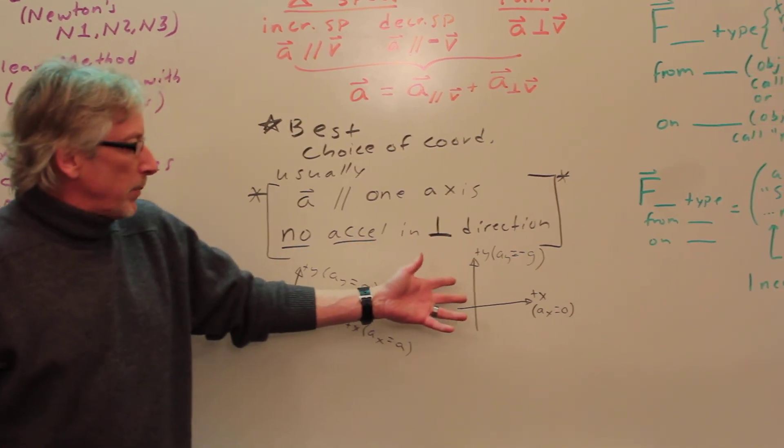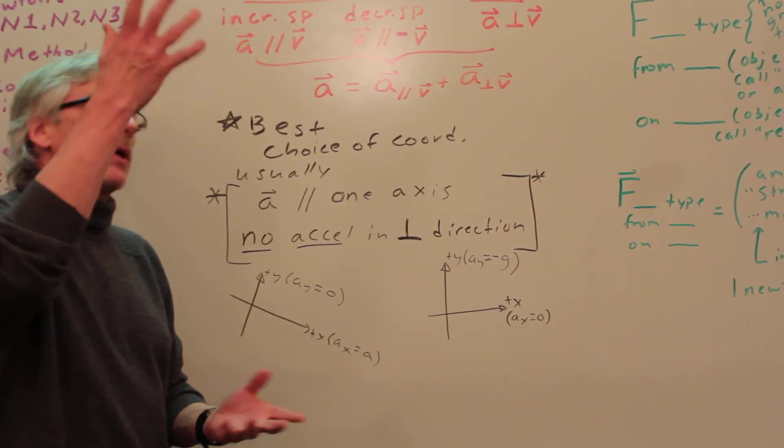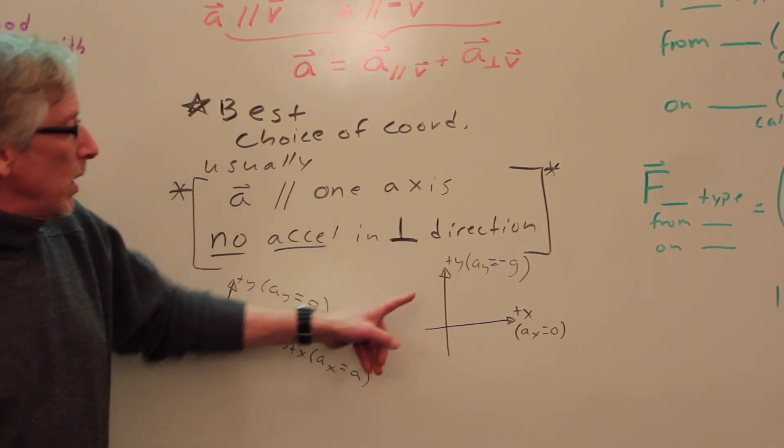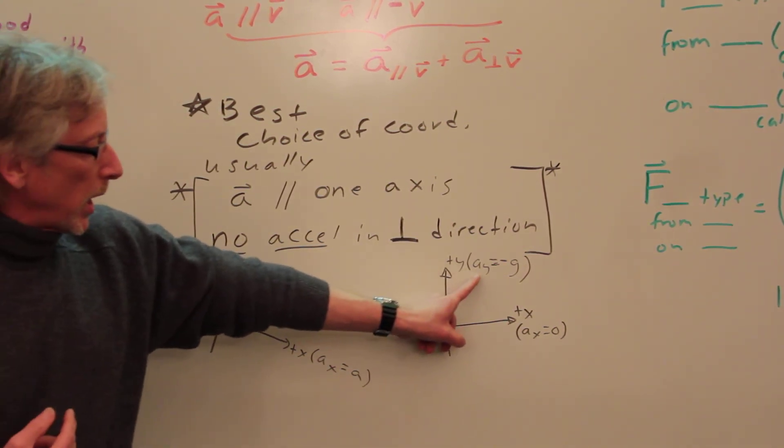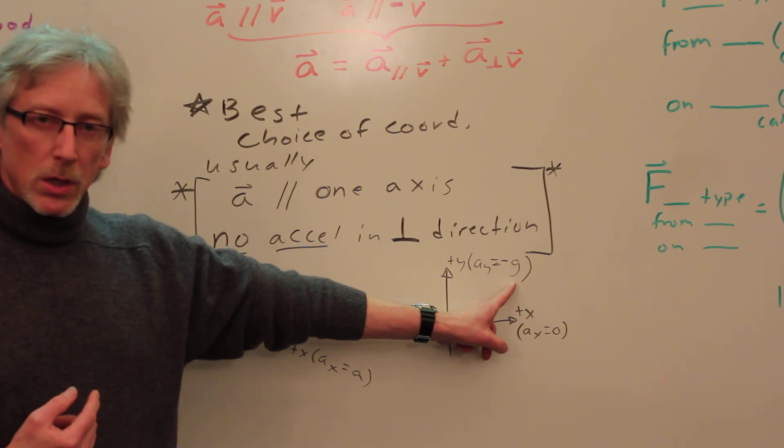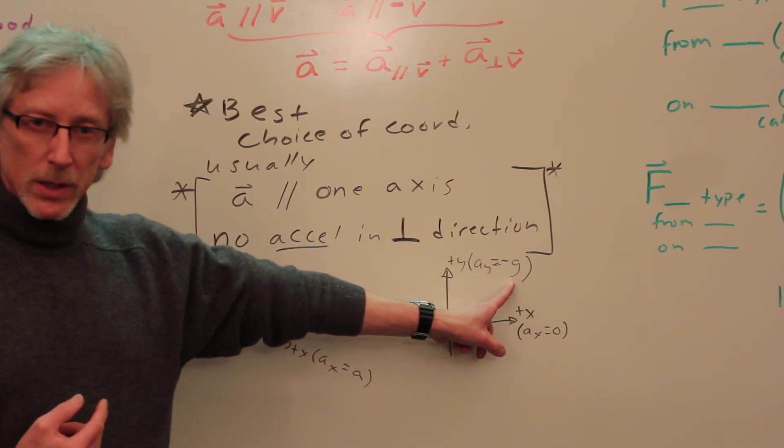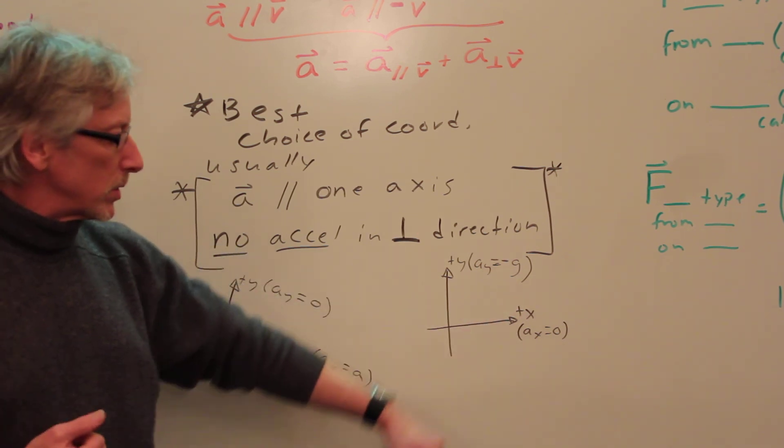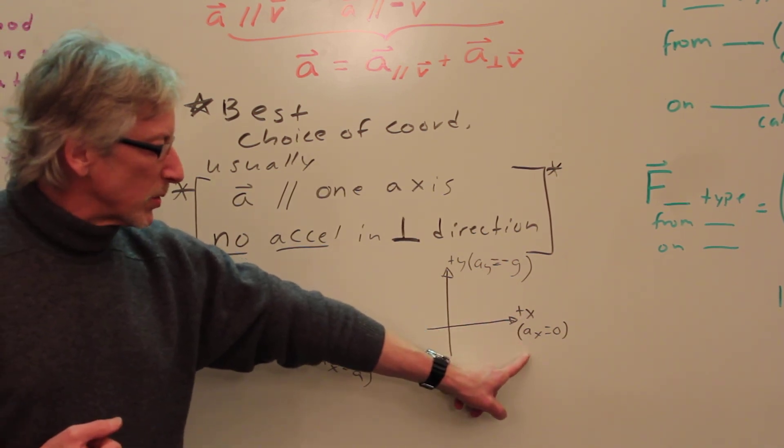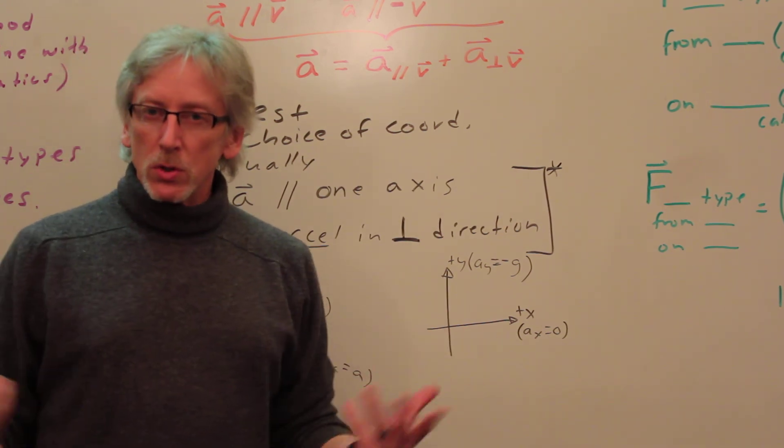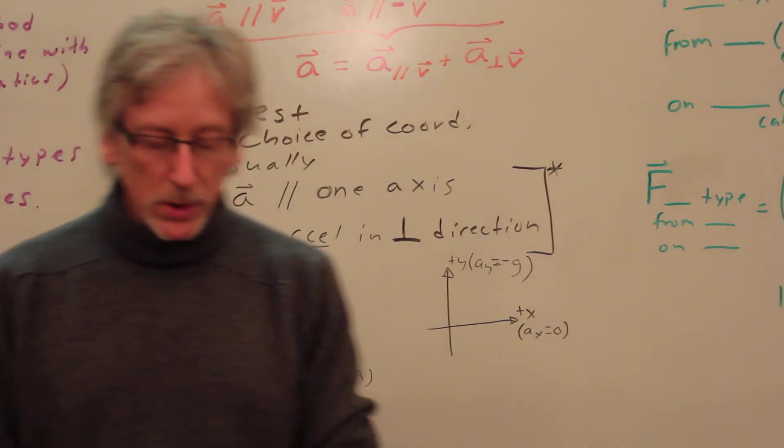Or, for example, projectile motion. Now, if it goes up, I often call up positive. If it only goes down, I call it down positive. But if I call up positive, Ay is negative g, where g is not gravity. It's the free fall acceleration or free flight acceleration. And then the horizontal direction, Ax is zero. Working from that, you can build your equations, then do the algebra. Okay. So we know acceleration.